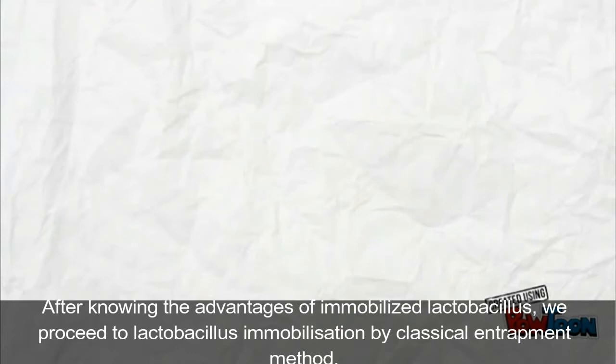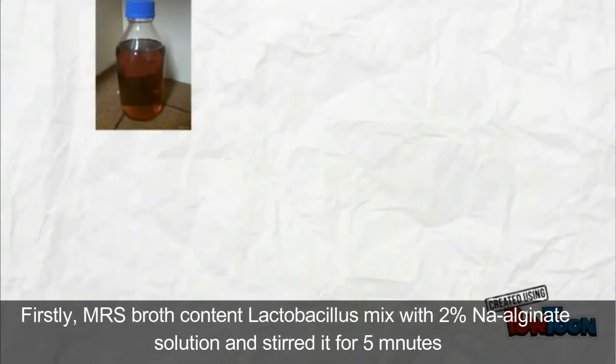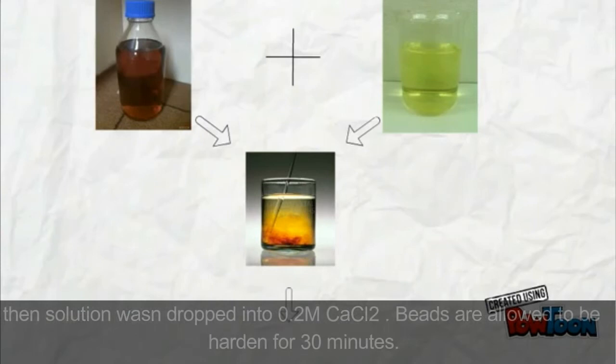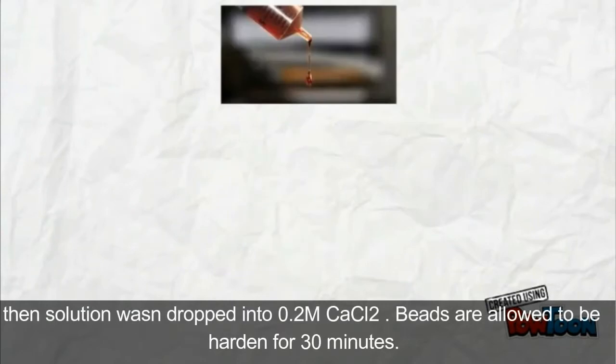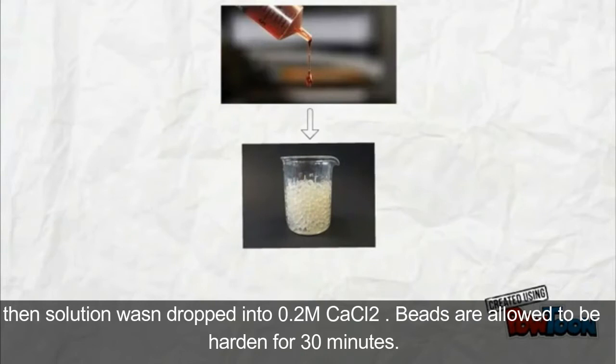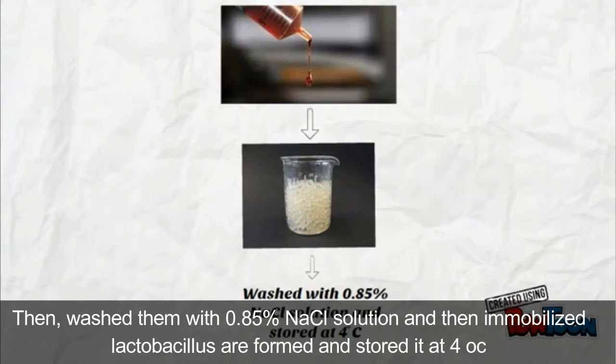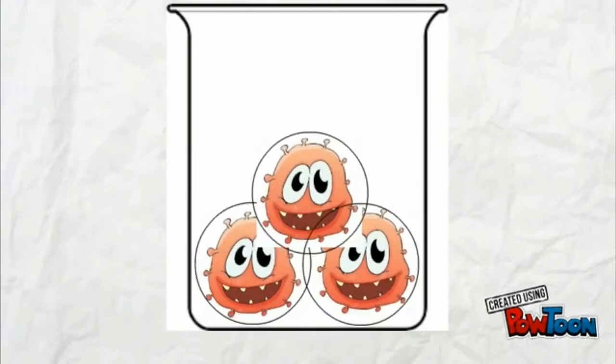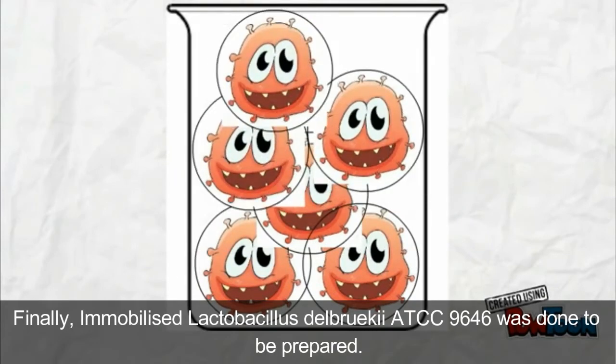After knowing the advantages of immobilized Lactobacillus, we proceed to Lactobacillus immobilization by classical entrapment method. Firstly, MRS broth containing Lactobacillus is mixed with 2% sodium alginate solution and stirred for 5 minutes. Then the solution was dropped into 0.2M calcium chloride. Beads are allowed to be hardened for 30 minutes. Then, wash them with 0.85% sodium chloride solution. And then immobilized Lactobacillus are formed. Store it at 4 degrees Celsius if we have not want to use it. Finally, immobilized Lactobacillus was done to be ready.